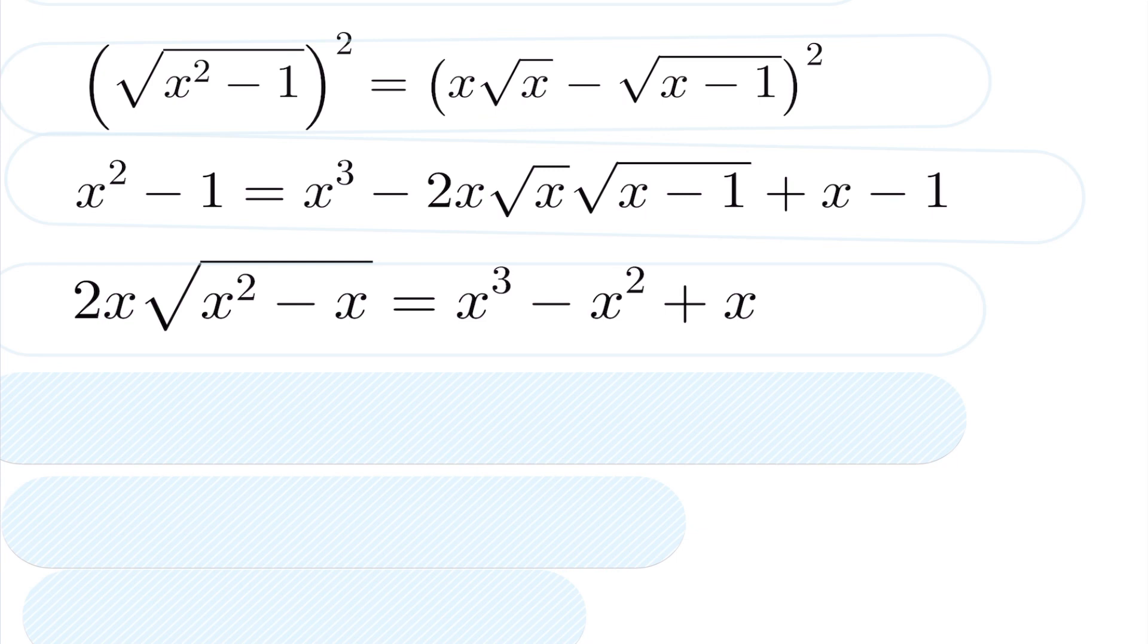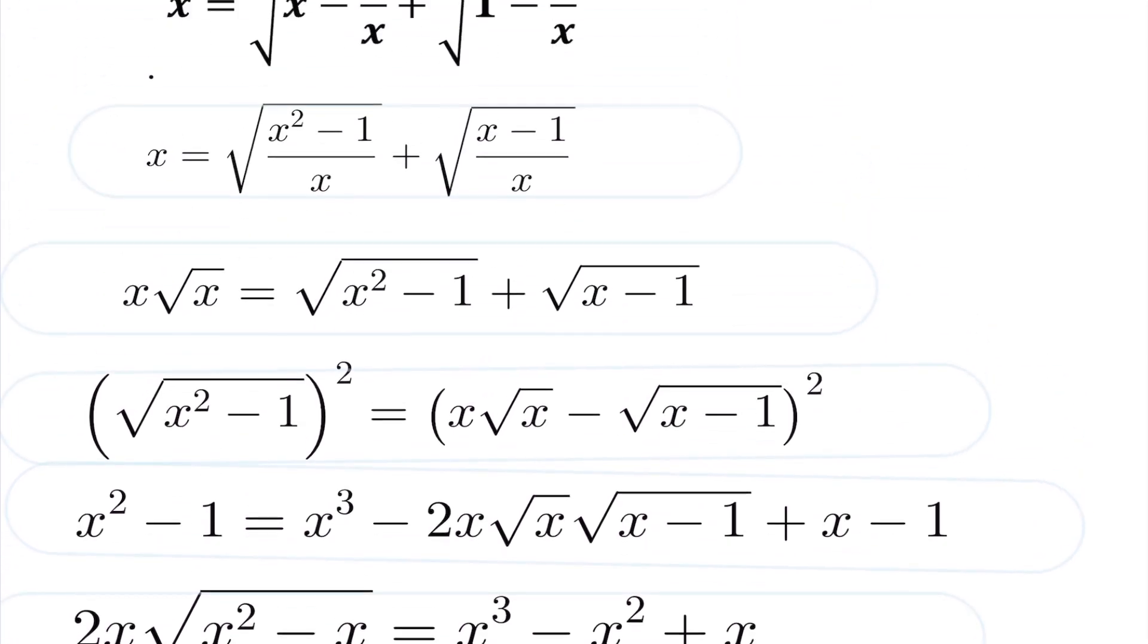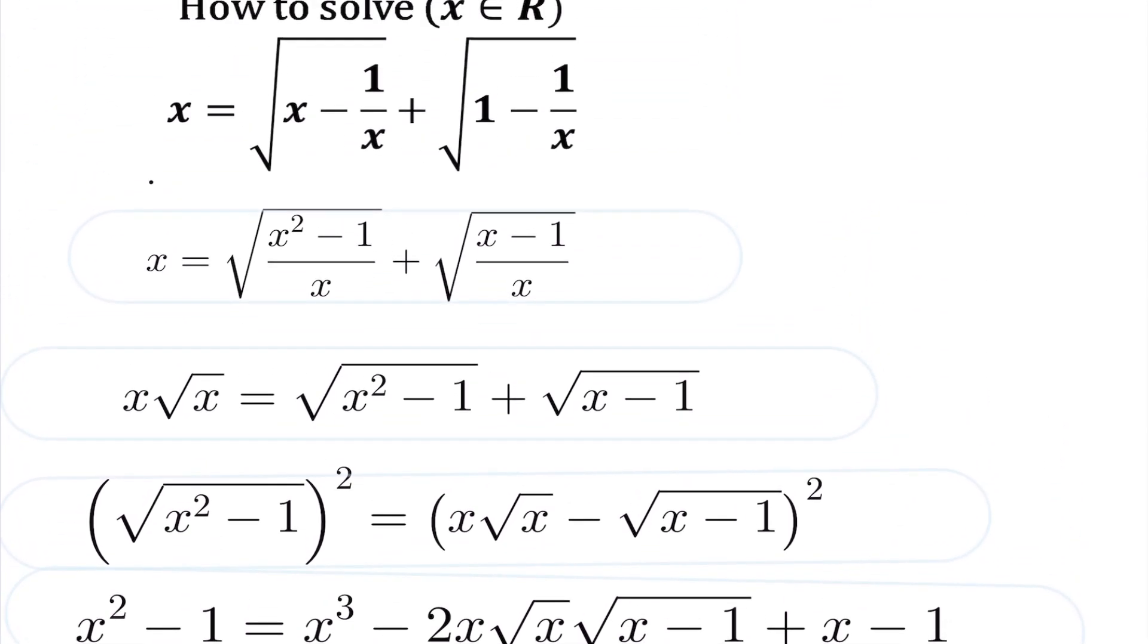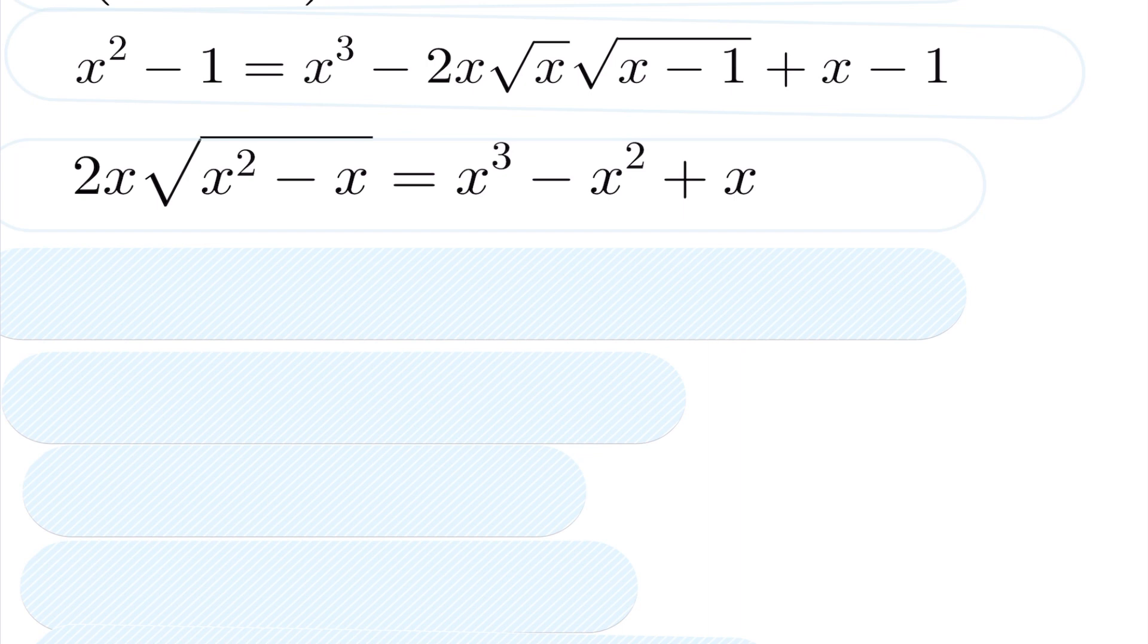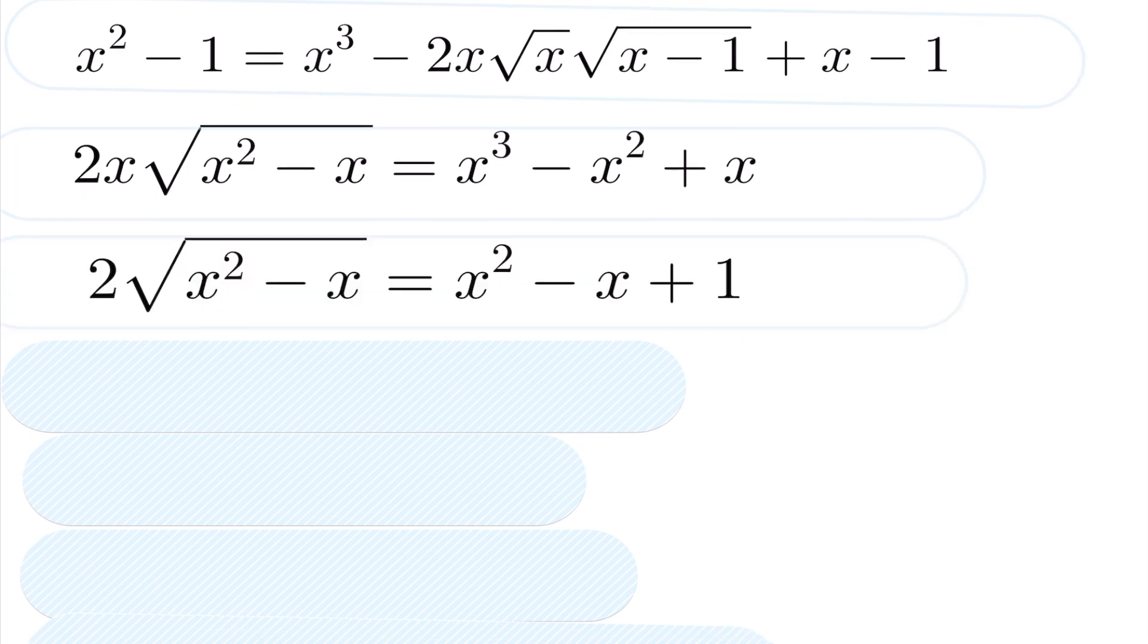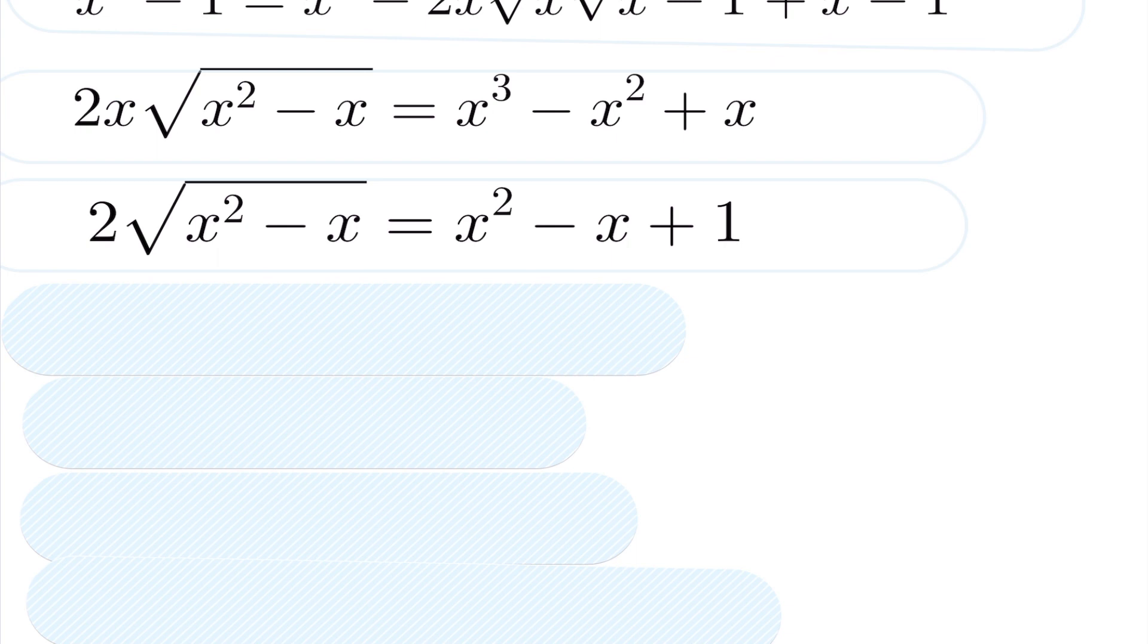Notice that this original equation, if we go back to the original equation, it only exists assuming x cannot equal 0. You cannot have x be 0 here. You'd be divided by 0. So 0 is not in our solution set. So I can divide across by x, giving us the following. I have 2 root of x squared minus x is x squared minus x plus 1.